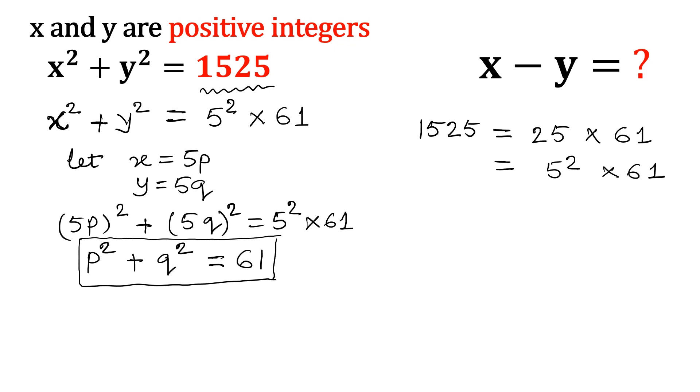Let us find out the square numbers. I am starting: 1 square is 1, 2 square is 4, 3 square is 9, 4 square is 16, 5 square is 25, 6 square is 36, 7 square is 49, and 8 square is 64.